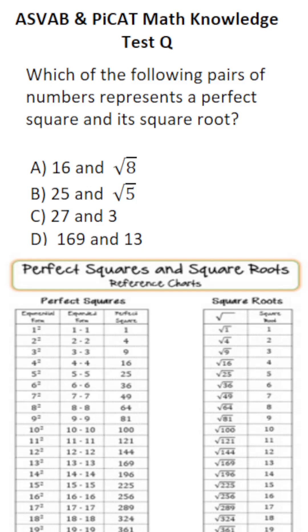This math knowledge practice test question for the ASVAB and PiCAT says, which of the following pairs of numbers represents a perfect square and its square root? So for the ASVAB and PiCAT, you have to know your perfect squares and square roots. I would say at least from 1 to 20.